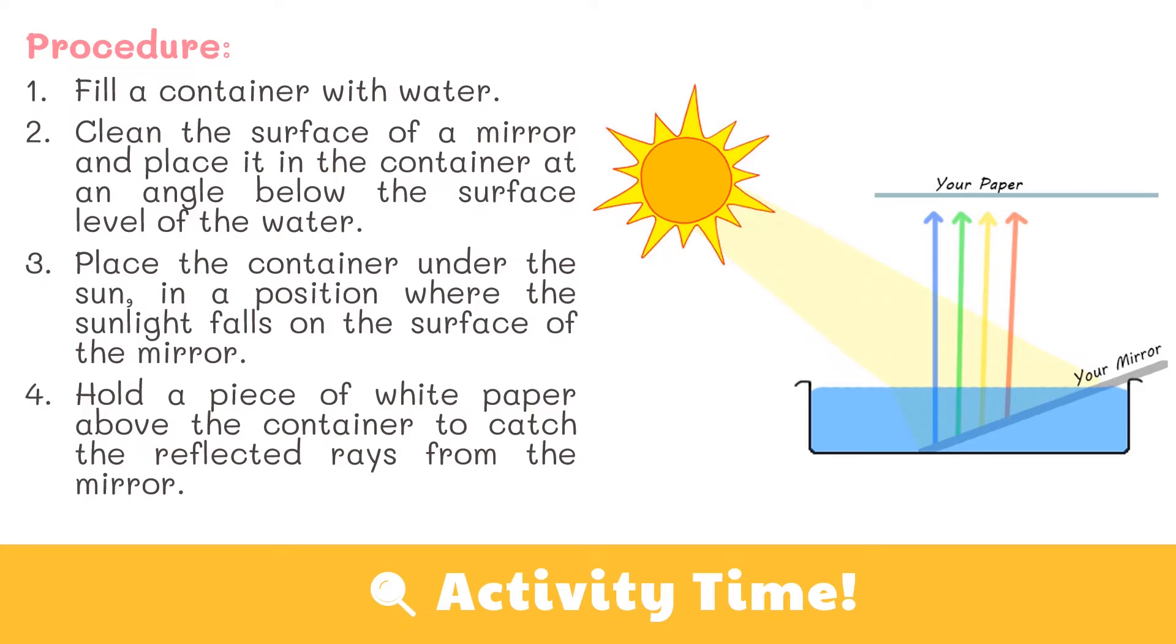Fill a container with water. Clean the surface of a mirror and place it into the container at an angle below the surface level of the water. Place the container under the sun in a position where the sunlight falls on the surface of the mirror. Hold a piece of white paper above the container to catch the reflected rays from the mirror.